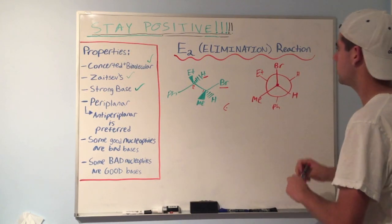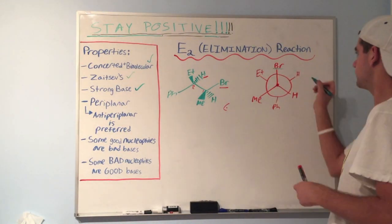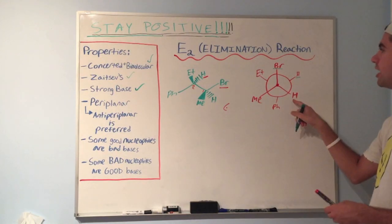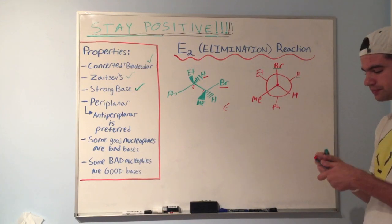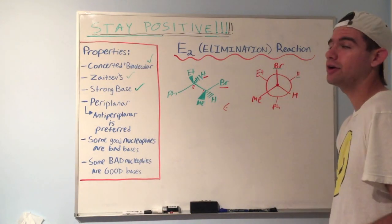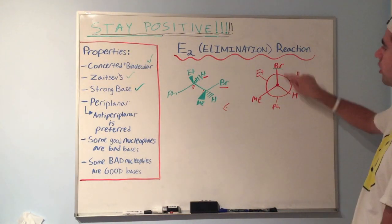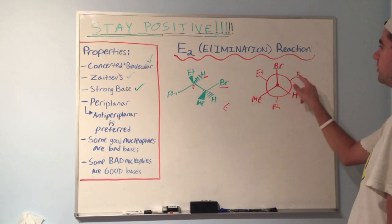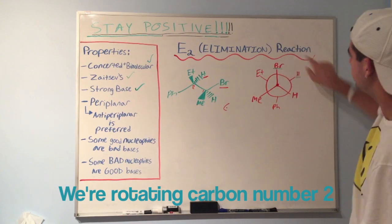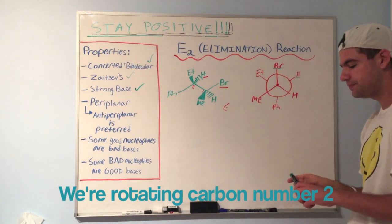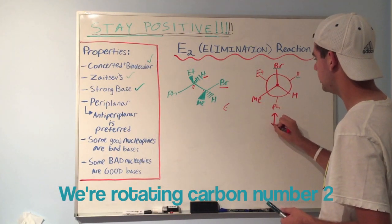This was our leaving group right here. And where's the hydrogen that we want to deprotonate? It's right here. It's this guy. It's not this hydrogen. This hydrogen and the bromine are on the same carbon. It's this hydrogen. So, are these anti-periplanar? The answer is no. Are they anti to each other? Of course not. Right now, the bromine is anti to the phenyl. The methyl is anti to the hydrogen. The hydrogen is anti to the ethyl. So, we want to bring this hydrogen down here.